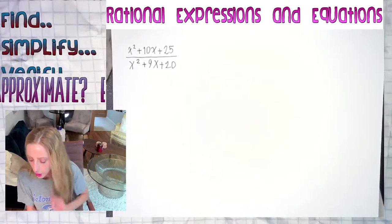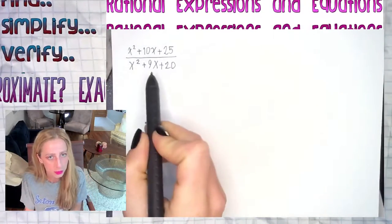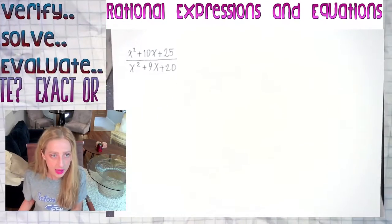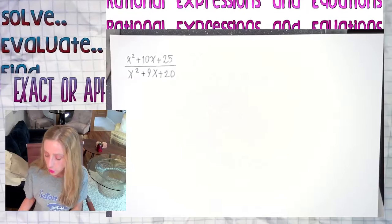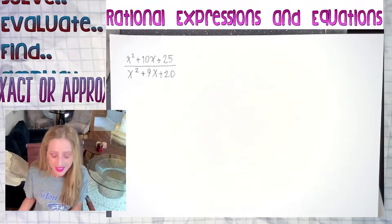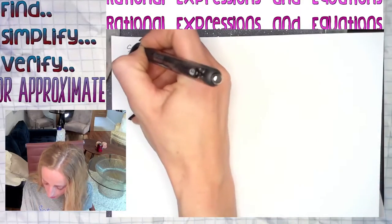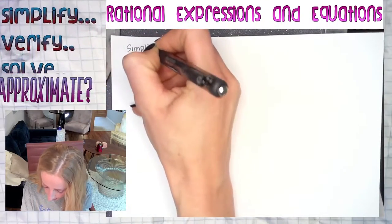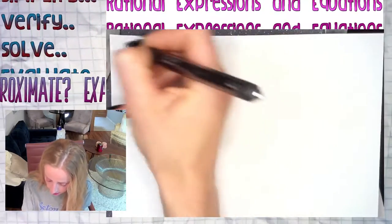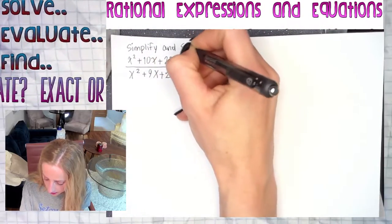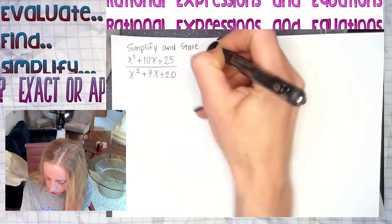Hey guys, in this video we are going to simplify the following rational expression and then after we simplify this rational expression we are also going to state the restrictions. So let's dive in. One thing we should always do is have directions above a problem. So I'm gonna write simplify and state restrictions.